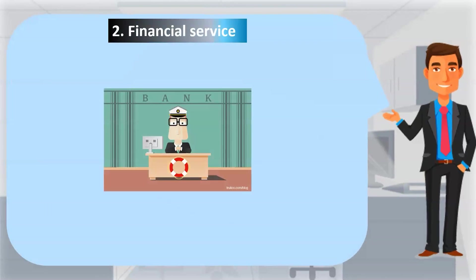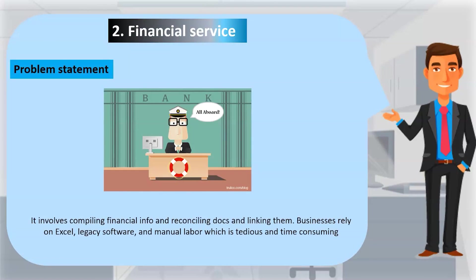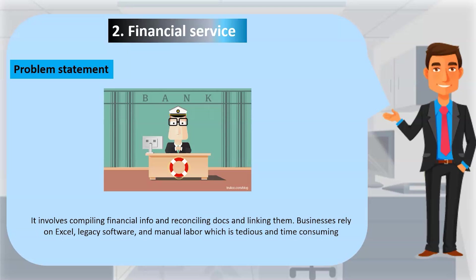The second example is Financial Service. Financial service involves compiling and combining financial information from various departments and storing the records in a system. Data is manually extracted from bank statements to reconcile documents and link them to forms using detailed spreadsheets. To complete the reports, businesses rely on Excel, legacy software, and manual labor, which is tedious and time-consuming.